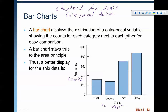That's the big difference between categorical and quantitative data — these buckets do not have a particular order to them. I could take the crew bucket and move it to the front, and it wouldn't have a severe impact on what we were learning from the graph. So categorical data bar charts just show us counts. We can see from this particular graph that in the Titanic data, the crew had the most people, followed by third class, then first class, then second class.